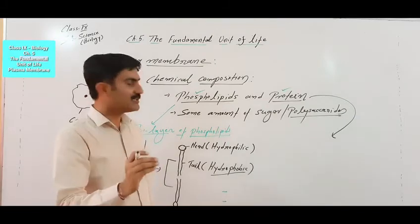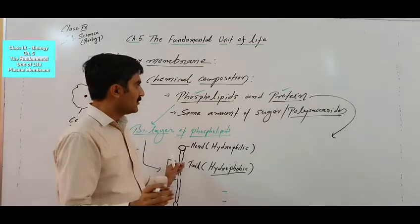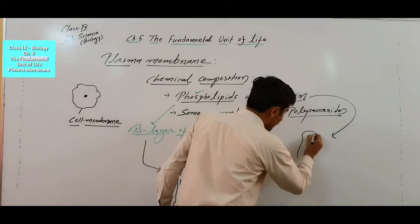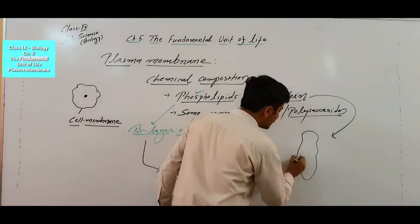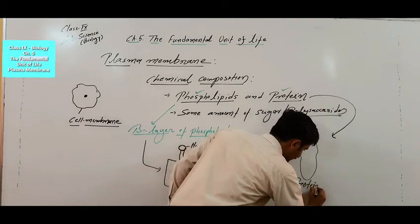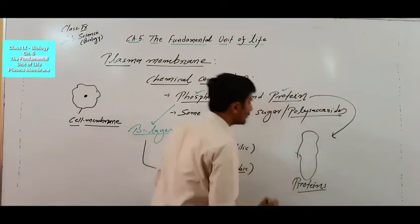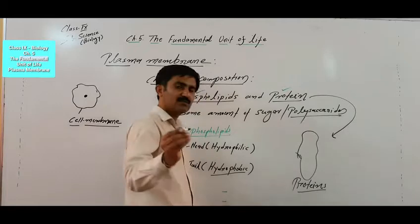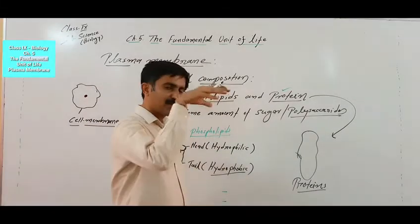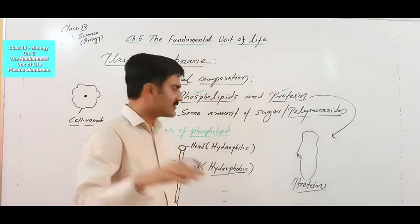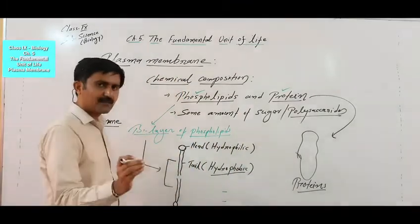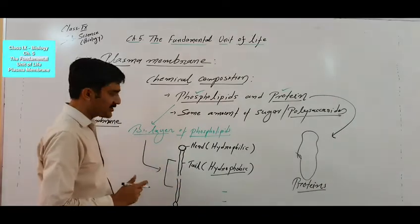Protein molecules are larger — these are macromolecules present between the layers of phospholipids, having a three-dimensional shape. These protein molecules may be completely embedded inside the plasma membrane or they may be superficial, sitting on the surface. Let's draw a simple diagram of the plasma membrane to understand its structure.